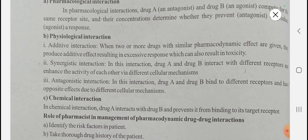Next is antagonistic interaction. In this interaction, drug A and drug B bind to different receptors and have opposite effects due to different cellular mechanisms. This is the physiologic antagonistic interaction.